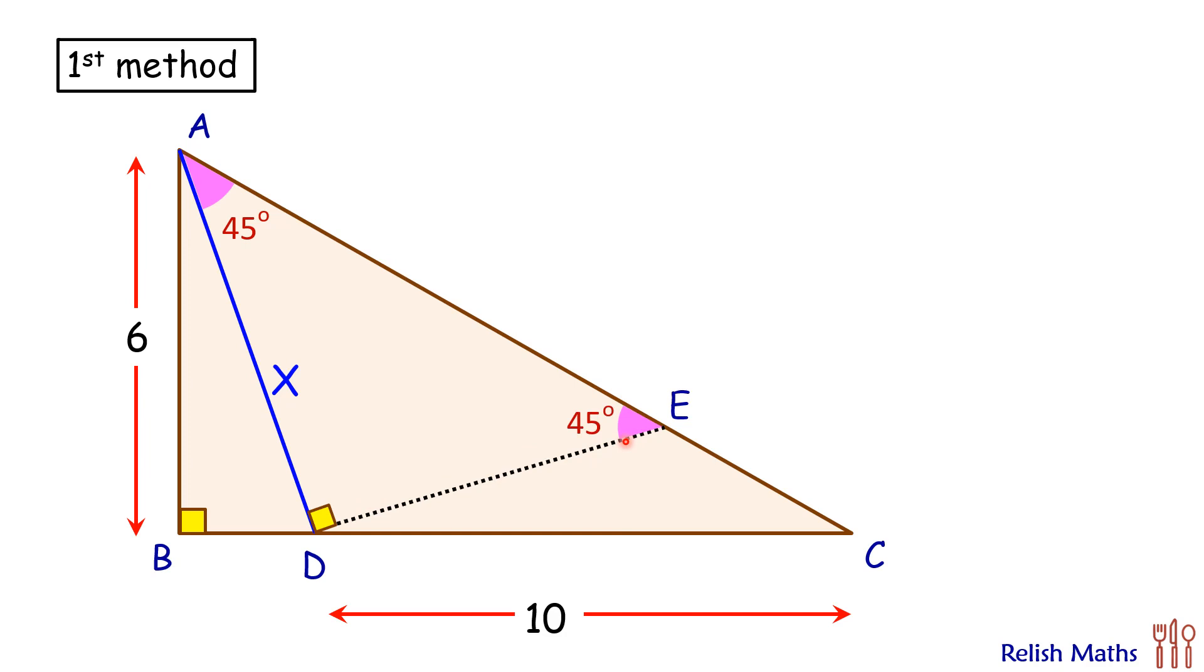Another construction: from E we are dropping a perpendicular EF meeting BC. Now here if this angle, let's assume this angle is alpha, so this angle here will be 90 minus alpha and thus this angle will again be alpha degrees.